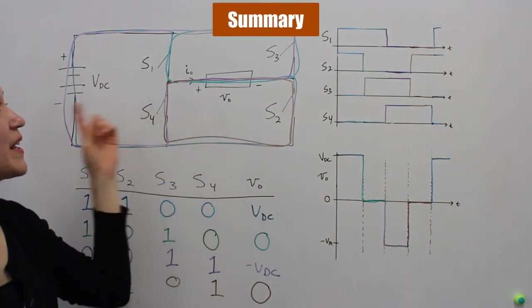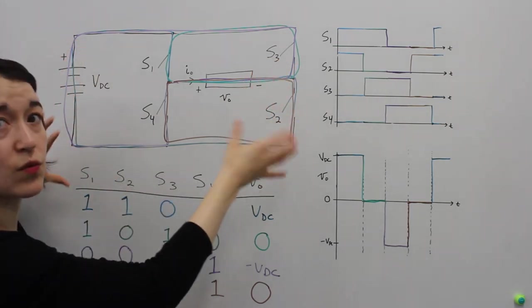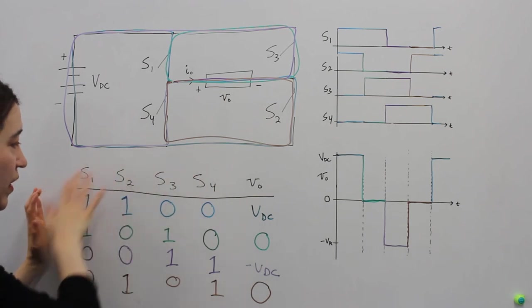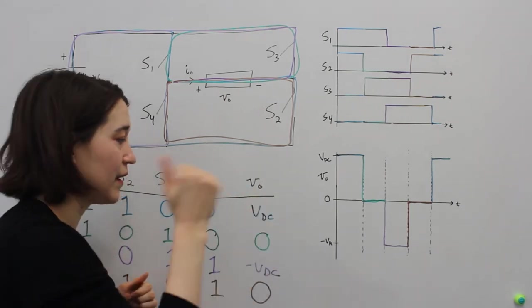So here we have looked at the ideal full bridge and the four combination of switches. These two must be complementary. You can plot this all out. We get three voltages. VDC positive, negative VDC, and zero.